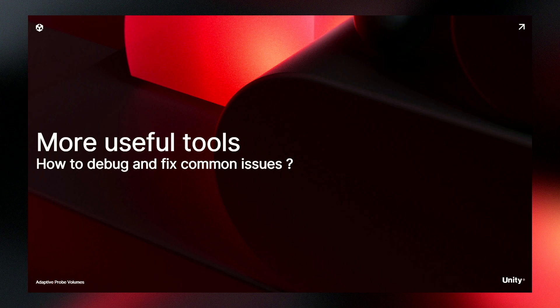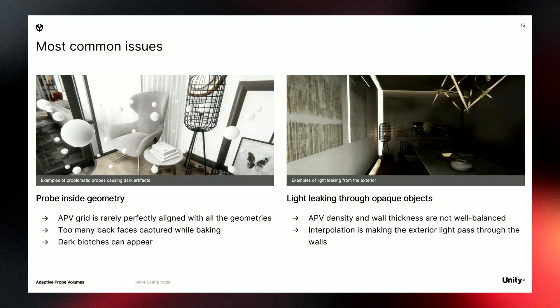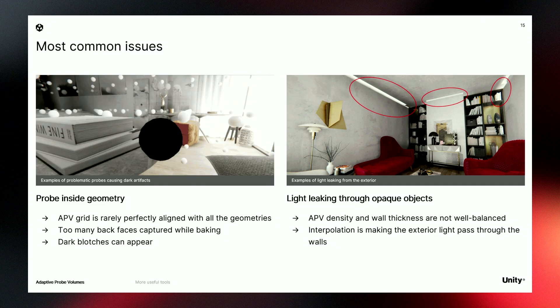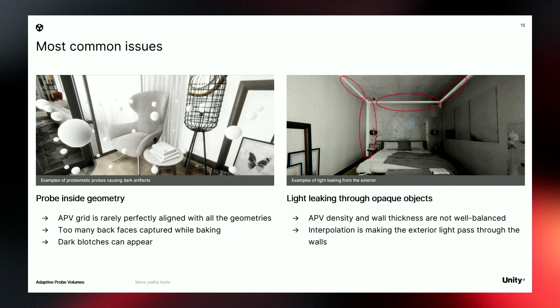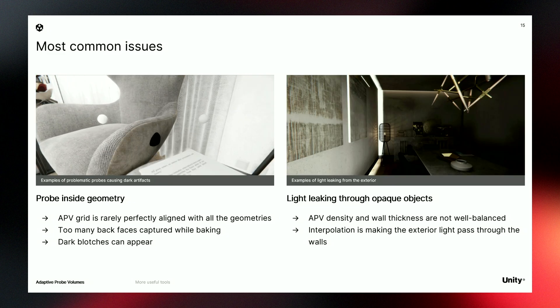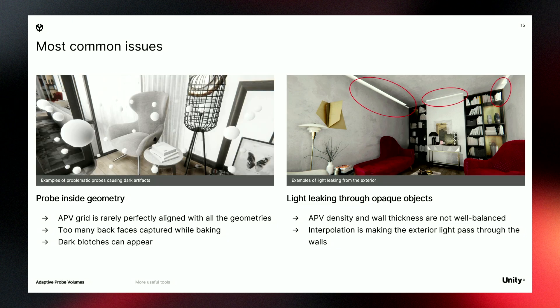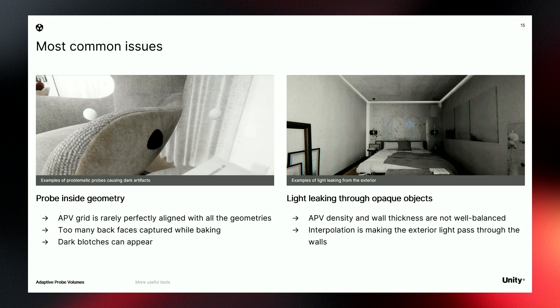Now let's take a bit of time to look at how APV can be set up efficiently, what tools are available, and how you can fix the most common issues. The APV grid is automatically generated, but it's regular and you cannot move a probe around. So probes might end up inside geometry or might not be completely aligned with the wall, resulting in dark stains on the wall or light leaking when exterior light comes into the interior.